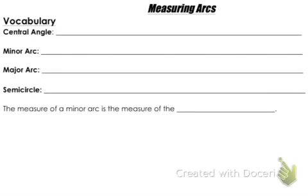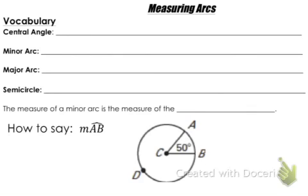Let's start with some vocabulary. Here is a picture of a circle, and this is how you say it. So if you ever see this symbol, it says: the measure of arc AB. So we're talking about measures of arcs here. When you see that symbol, that's how you would say it out loud or in your head.